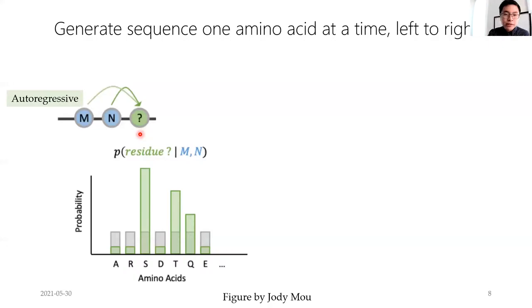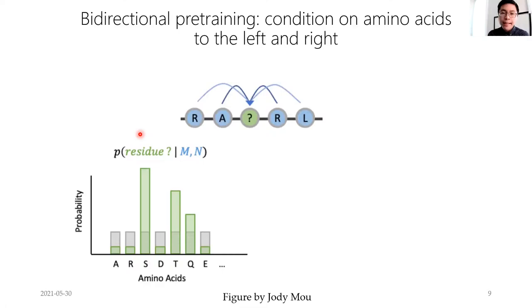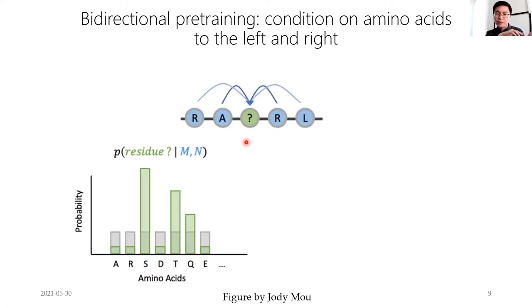This is somewhat unrealistic for proteins — even though they're synthesized on the ribosome from left to right, the identity of an amino acid depends on things both to its left and to its right. So there's another pre-training task: bi-directional pre-training. Instead of just looking at residues on the left, it also looks at residues to the right, conditions on those identities, and predicts the masked amino acid in the middle. You're still defining a probability distribution over amino acids conditioned on the rest of the sequence.